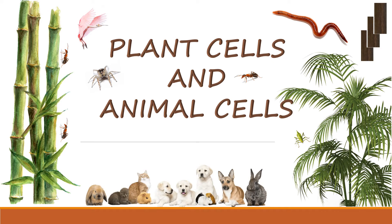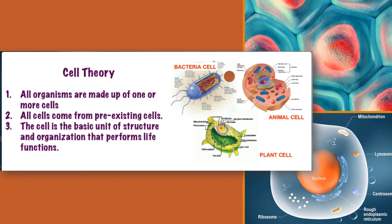Plant cells and animal cells. Cell theory: All organisms are made up of one or more cells. Number two, all cells come from pre-existing cells. And number three, the cell is a basic unit of structure and organization that performs life functions.